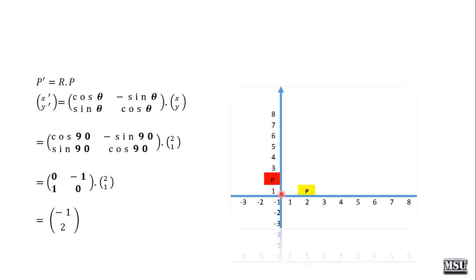Initially the point is located at (2, 1). After rotation, the point is now located at (−1, 2). With respect to the origin, the angle between the original point and the new point — from origin to p and origin to p dash — is 90 degrees.